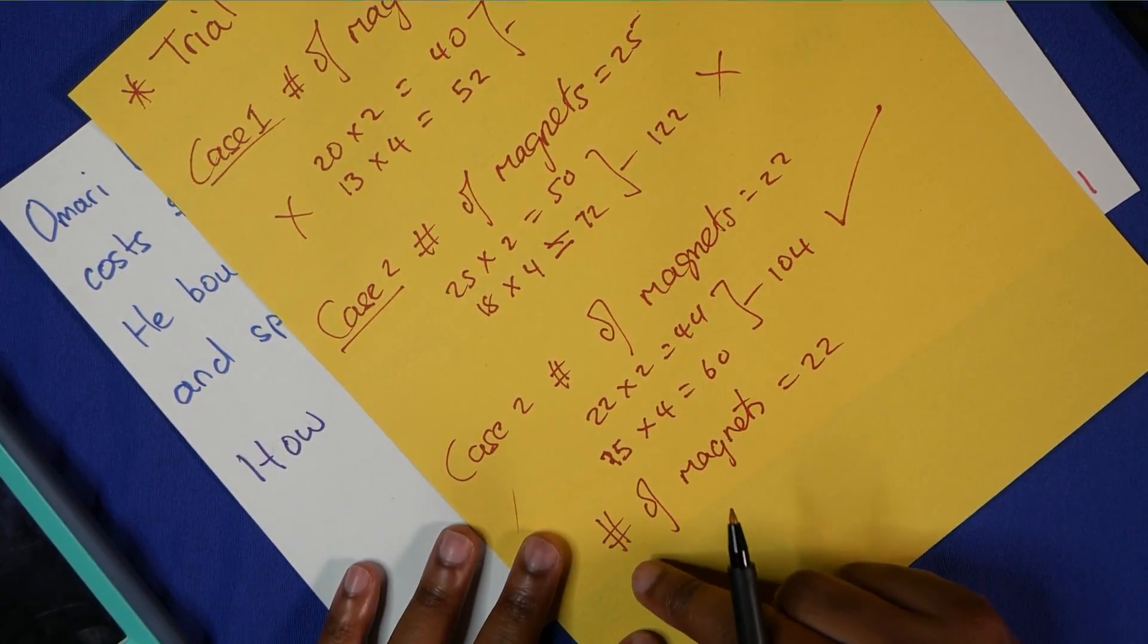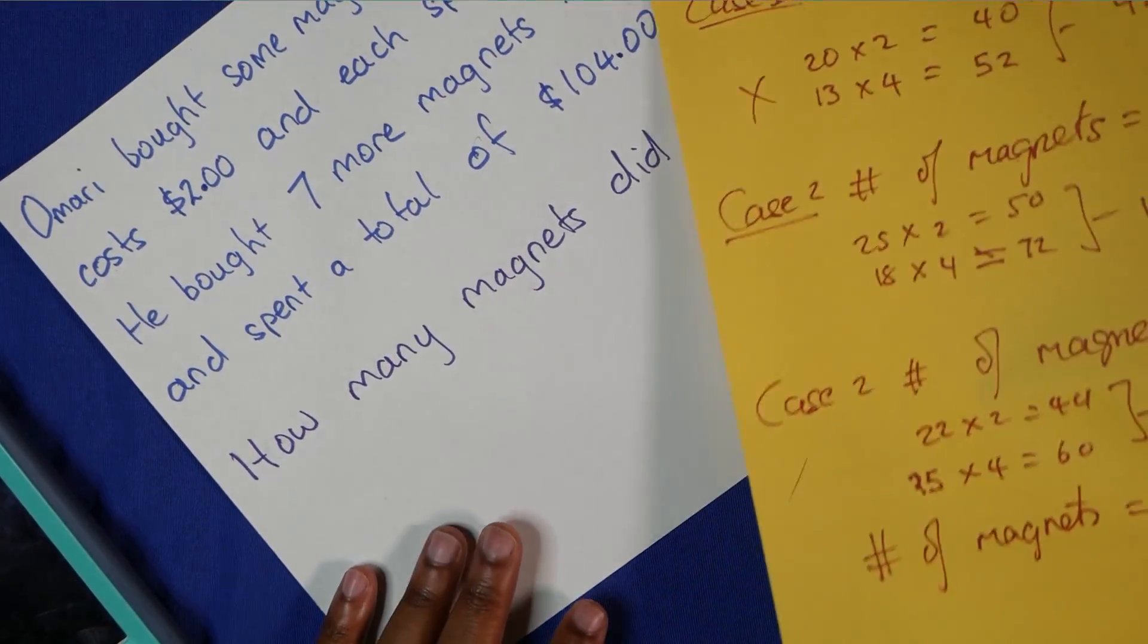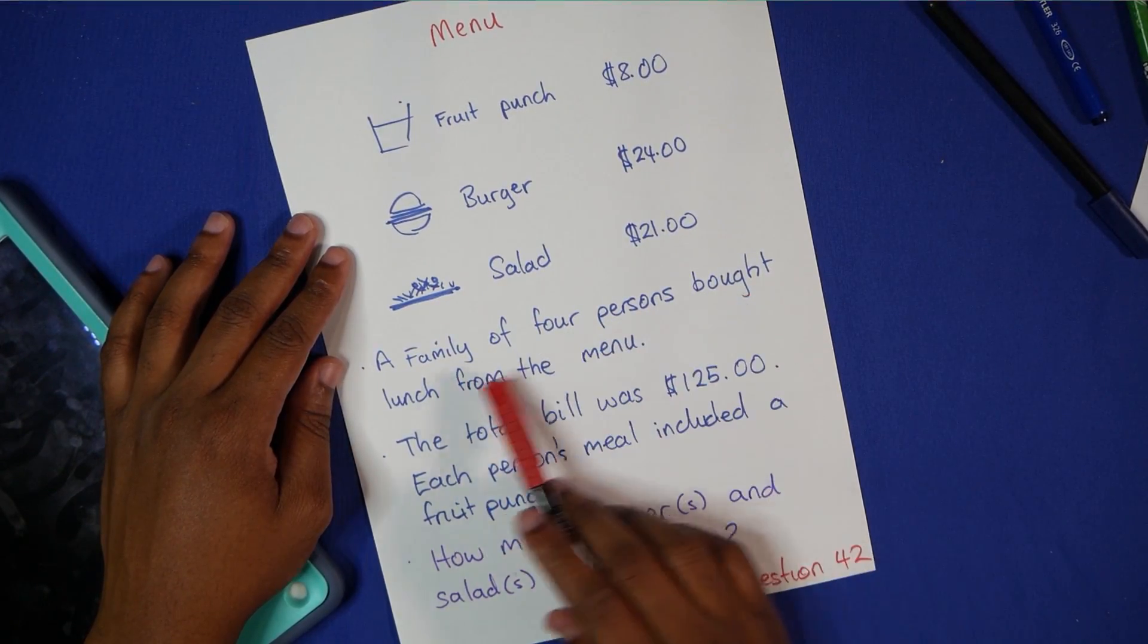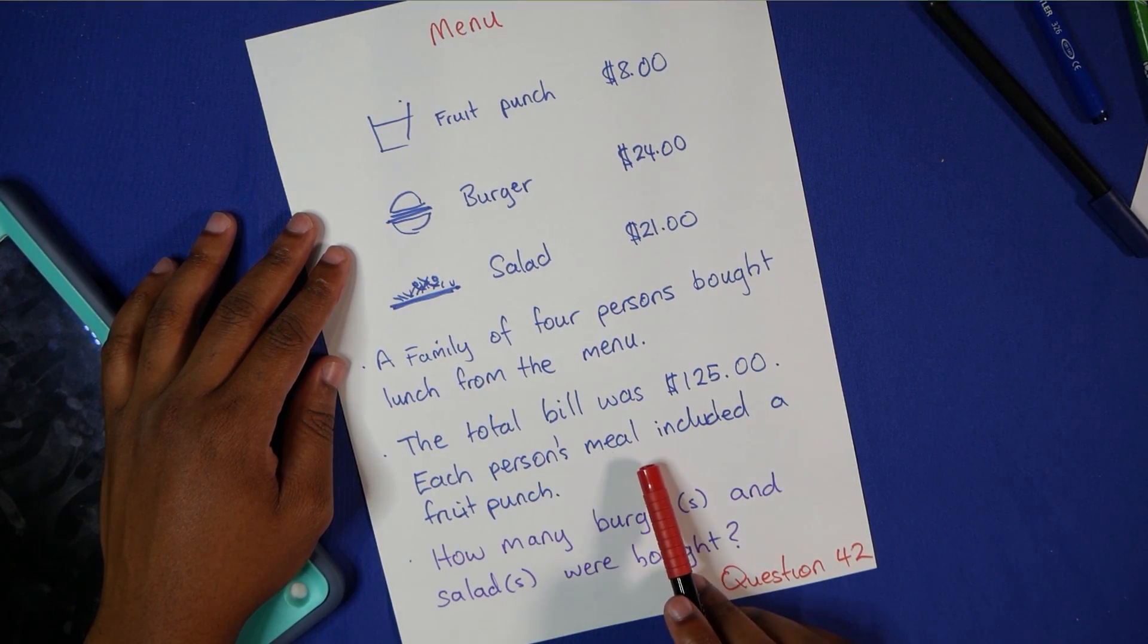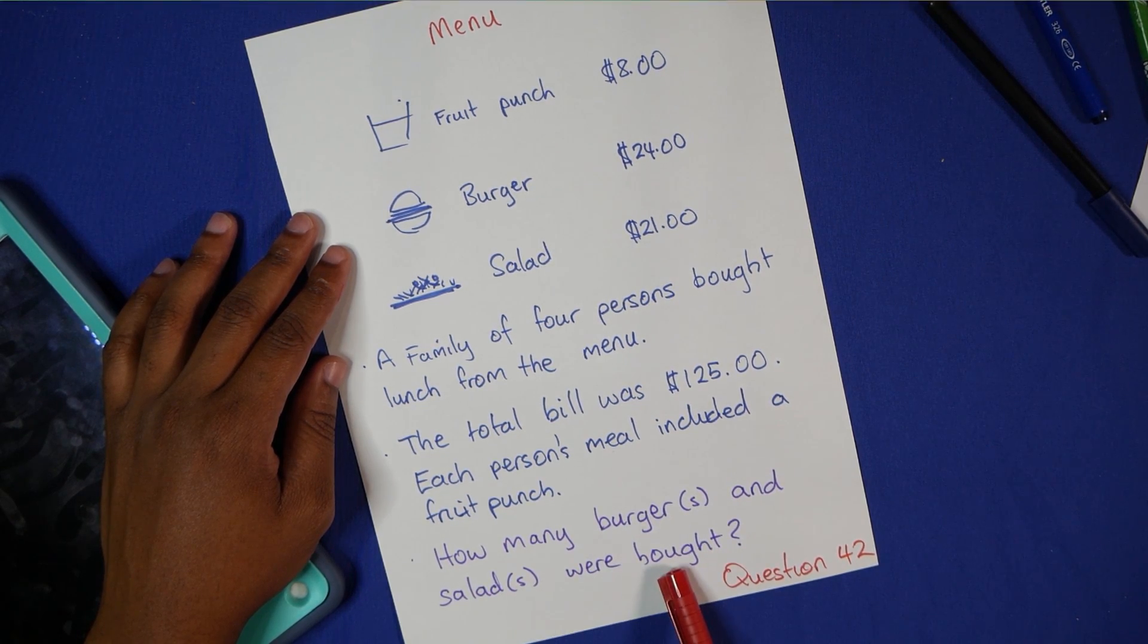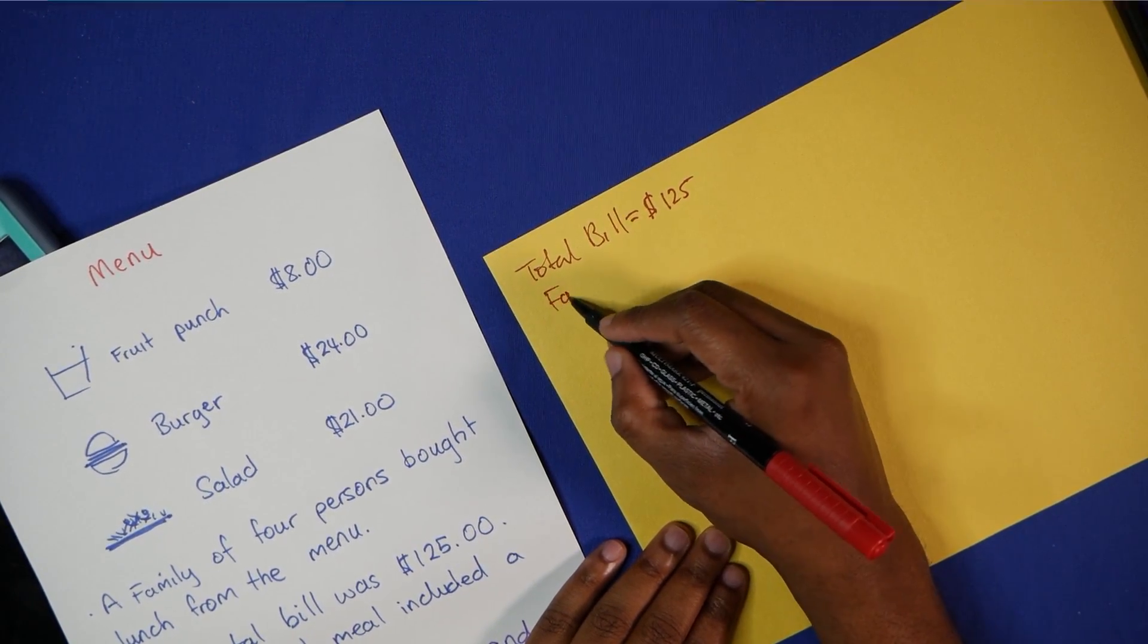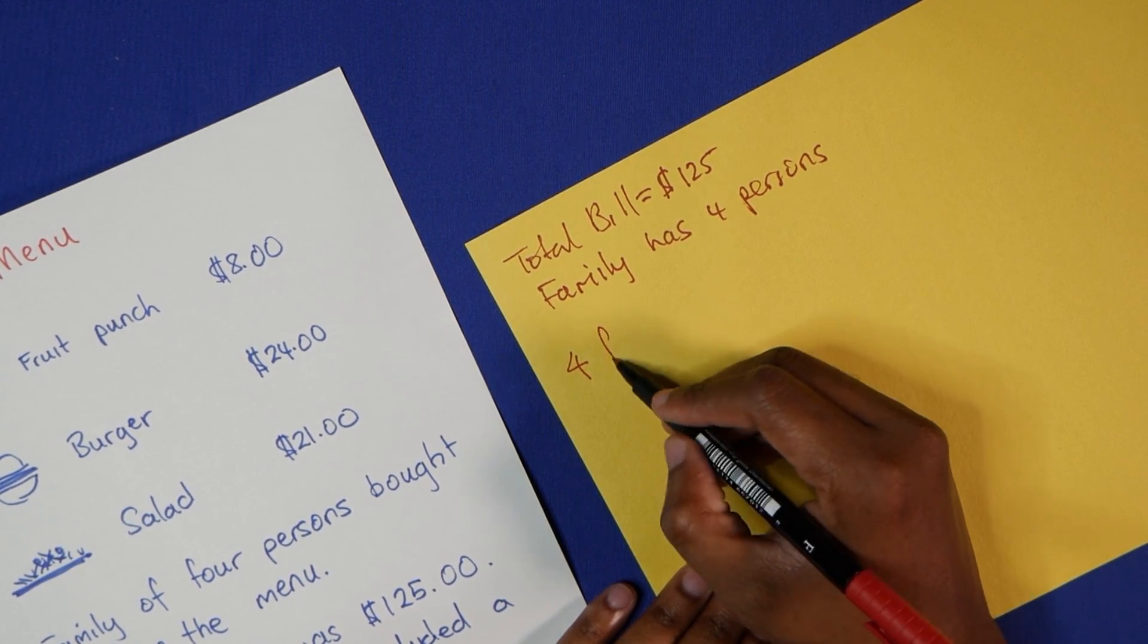I just realized that using hashtag for the number sign, you may actually want to write 'number of magnets.' All right, let's move on to the next question, Question 42. We were given a menu. We are told that a family of four persons bought lunch from the menu. The total bill was $125, but each person's meal included a fruit punch. How many burgers and salads were bought?